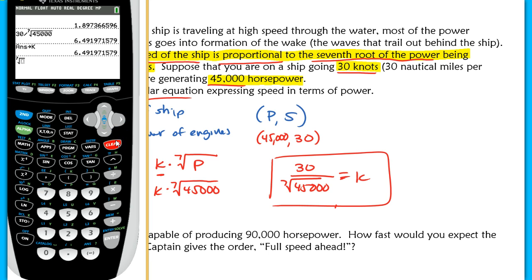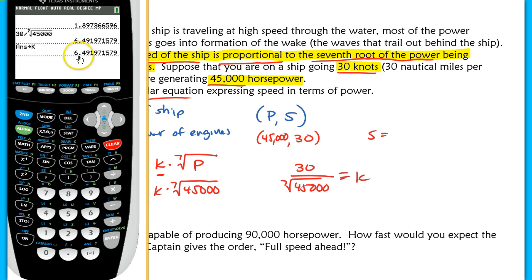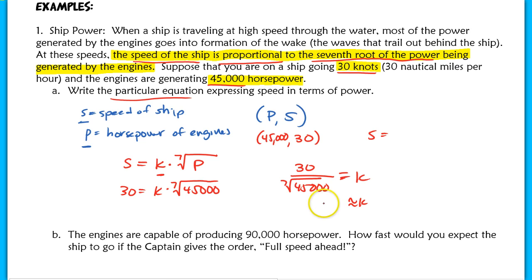Let's say you weren't comfortable with the nth root at all. You can always change this number to a rational power. So let's change this to 30 over 45,000 to the one-seventh power. You can calculate that, and you'll get the exact same k value. Now I have my k value. So my particular equation should be s equals, and I'm just going to use a decimal here, 6.49. So it's approximately 6.49 times the seventh root of p. This is the particular equation to answer part a.